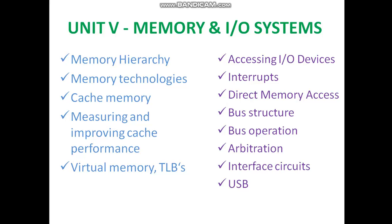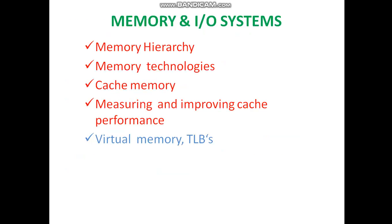Hi everyone, this is regarding computer architecture Unit 4: Memory and I/O Systems. The topics we should cover are: memory hierarchy, memory technologies, cache memory, measuring and improving cache performance, virtual memory, TLB, and then exports accessing I/O devices, interrupts, direct memory access, bus structures, bus operation, arbitration, interface circuits, and finally USB. In today's session we will discuss memory hierarchy, memory technologies, cache memory, and measuring and improving cache performance.